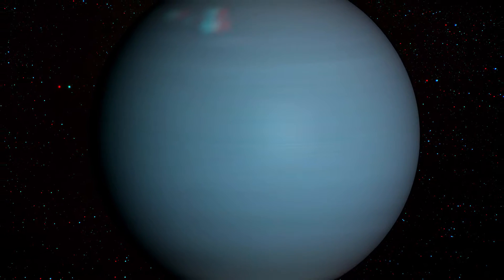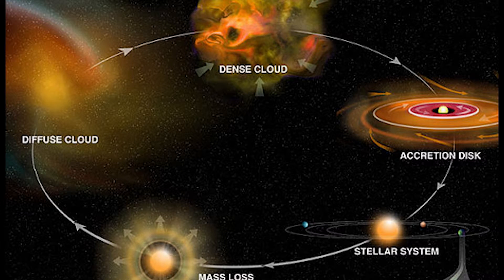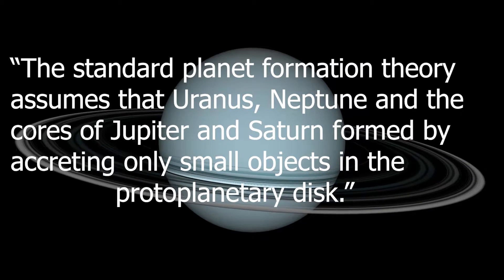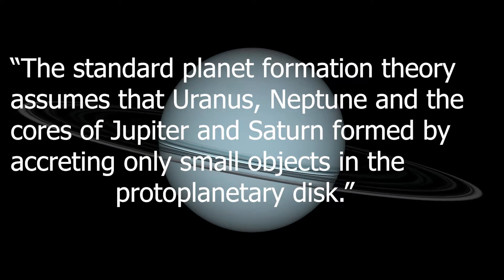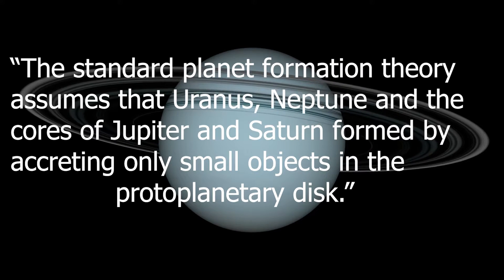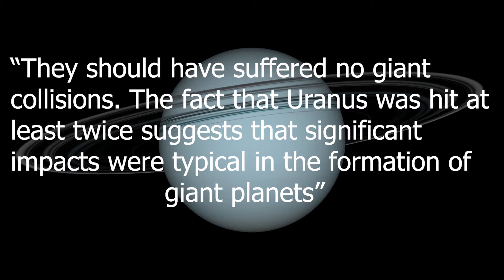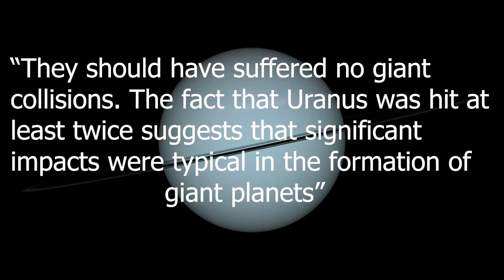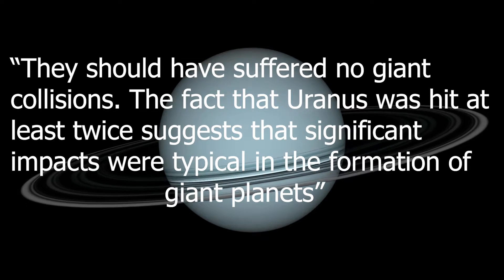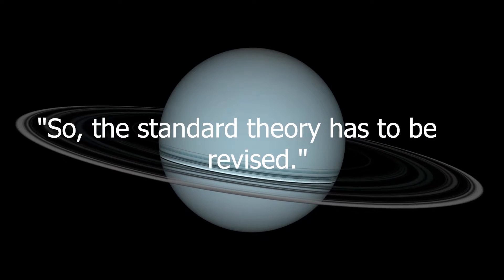The idea that Uranus was hit by an object actually contradicts the existing standard planet formation theory. Alessandro Morbidelli, study leader of this crazy mystery, stated the standard planet formation theory assumes that Uranus, Neptune, and the cores of Jupiter and Saturn formed by accreting only small objects in the protoplanetary disk. They should have suffered no giant collisions. The fact that Uranus was hit at least twice suggests that significant impacts were typical in the formation of giant planets. So the standard theory has to be revised.